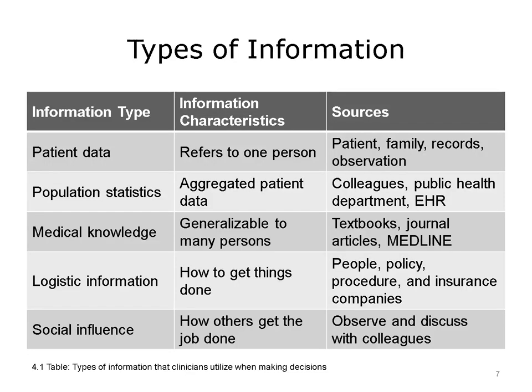Clinicians use many different types of information while assessing and managing patients. The table lists five types of information that clinicians commonly use. The first type of information is patient data, or information that's specific to an individual person, such as whether he or she has allergies, a history of diabetes, or a heart murmur. This information can be obtained from various sources: the patient, the patient's family or friends, medical records, the patient's personal health record, and/or the clinician's own observations while conducting the history and physical examination.